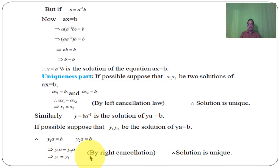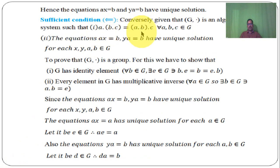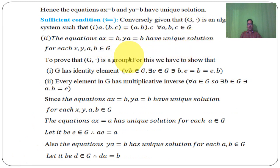Now for the sufficient condition: conversely, given that G dot is an algebraic system such that A dot (B dot C) equal to (A dot B) dot C for each A, B, C belongs to G, and the equations AX equal to B, YA equal to B have a unique solution for each X, Y, A, B belongs to G.